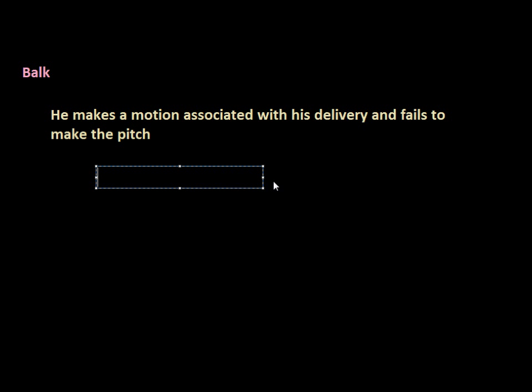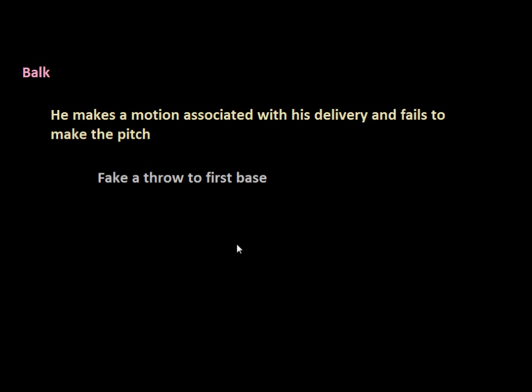The next way is that he fakes a throw to first base — this refers to faking a pick-off move. He can fake to other bases like third base or second base, but he cannot fake to first base. There is one exception: if he does something called a step to third and then look to first, where he steps toward third base and then spins around and steps toward first, he would not have to throw the ball in that case.